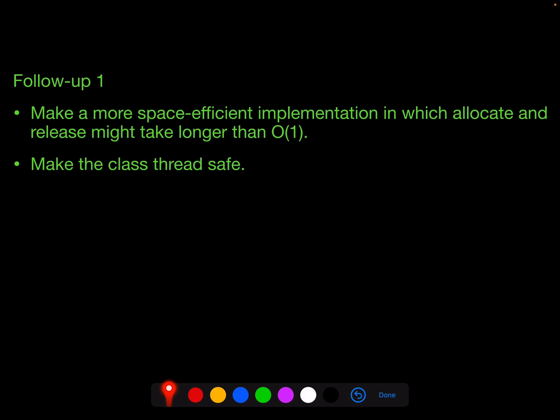And let's see the first follow-up. The first follow-up will require us to make a more space efficient implementation than the previous code. If you do it that way with hash set and queue combination, as a trade-off, allocate and release can take longer than big O of one. The second follow-up will be to make the class thread safe. In examples, if multiple threads will access this class, how do you make that safe? You can pause here to think about how you improve the previous method to achieve those requirements.